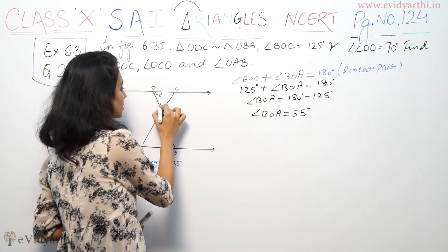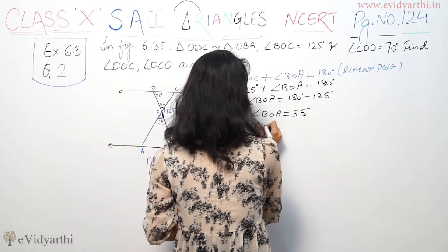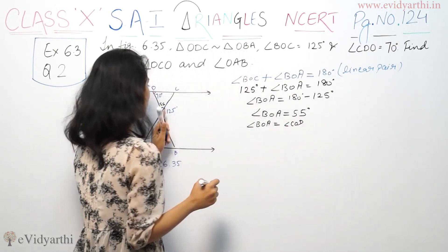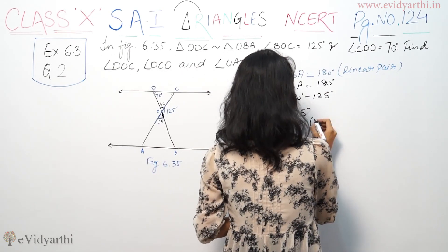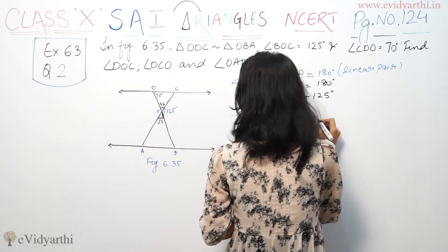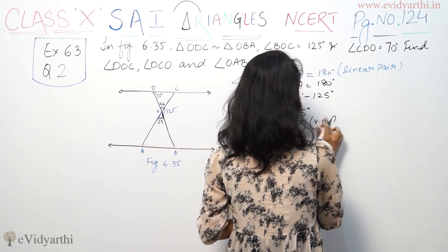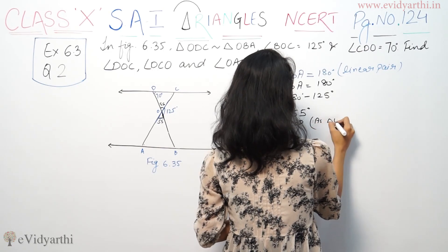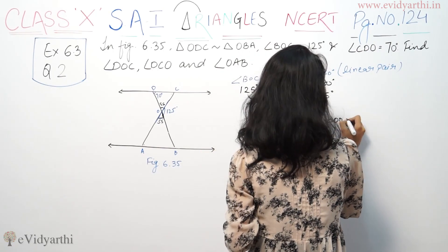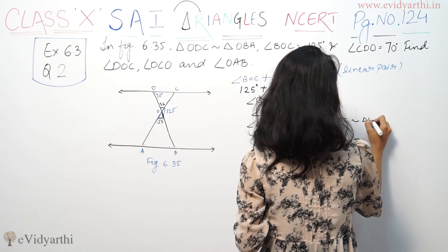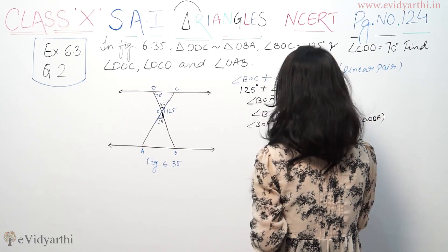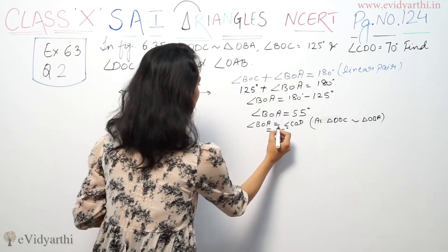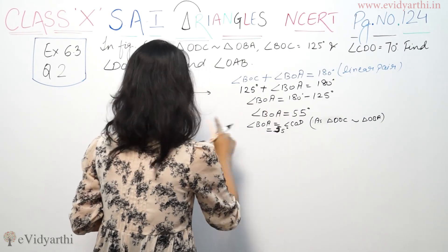Reason is vertically opposite angles. So, angle DOA is equal to angle COD, vertically opposite angles. As triangle ODC is similar to triangle ODA, COD is also 55.